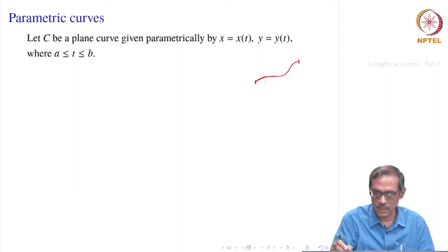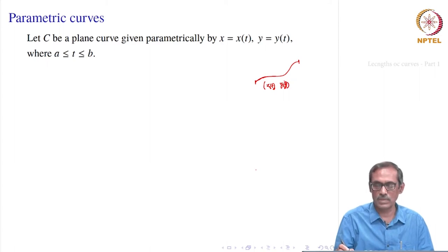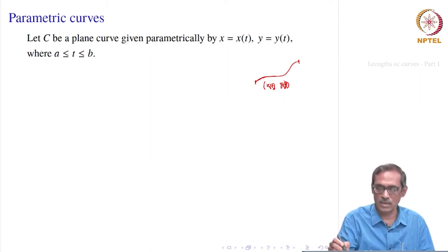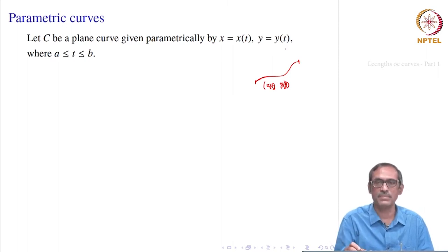Any point here can be thought of as having components — one x-component and another y-component. When t varies, both these components vary. You may think of them as functions x of t and y of t. So, once a curve is there, we may think of it as given parametrically by x equal to x of t, y equal to y of t.